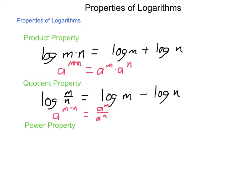The power property: if we have log of m to the n, that is equal to n log of m. And what we had before was a to the m times n equaled a to the m to the n.